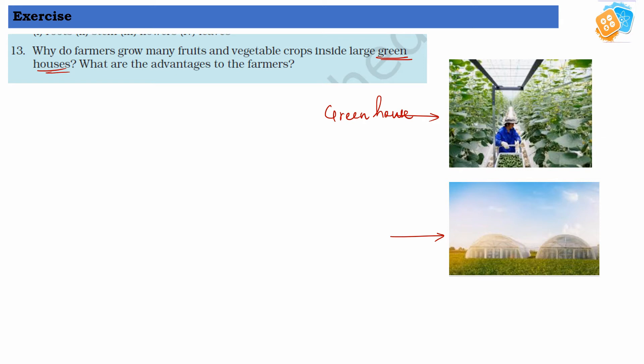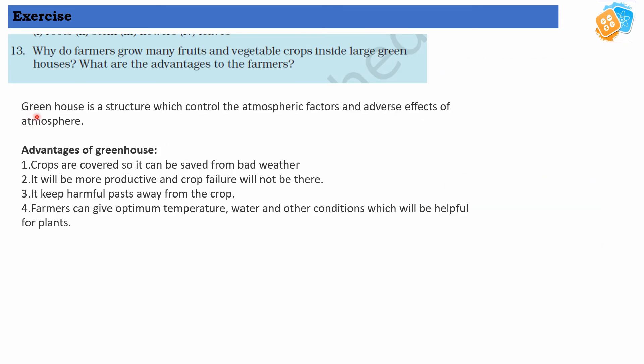They cannot manage all these factors when growing vegetables and fruits outside the greenhouse. What is a greenhouse? A greenhouse is a structure which controls the atmospheric factors and adverse effects of atmosphere.